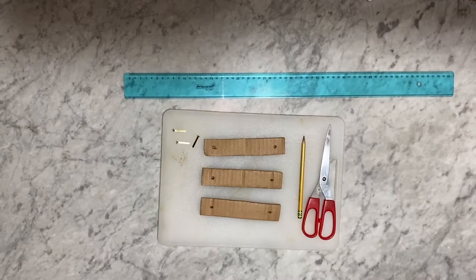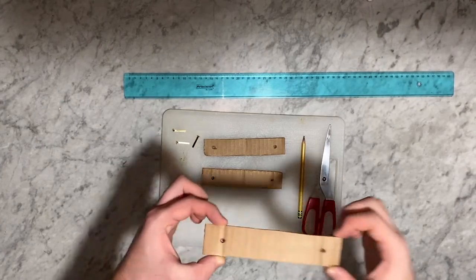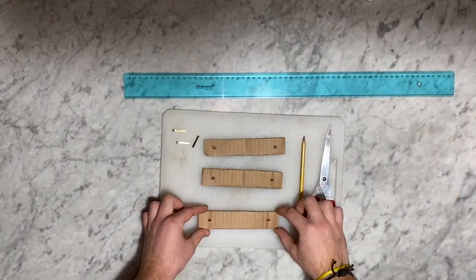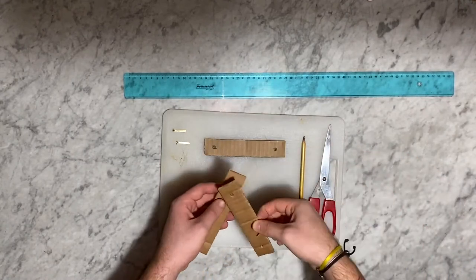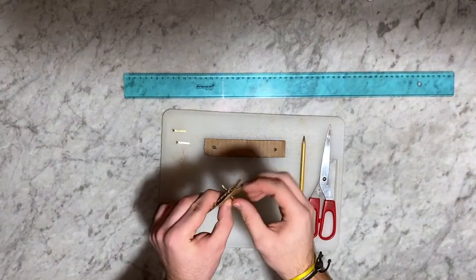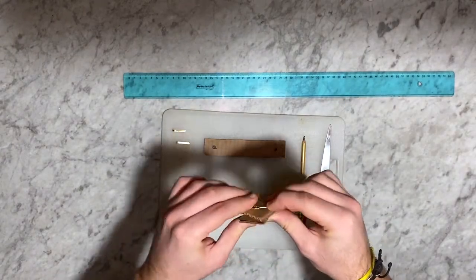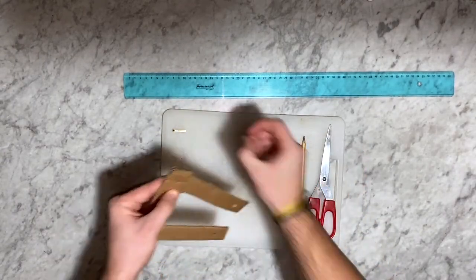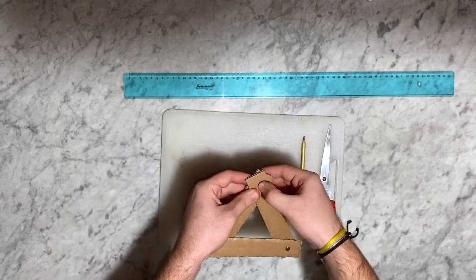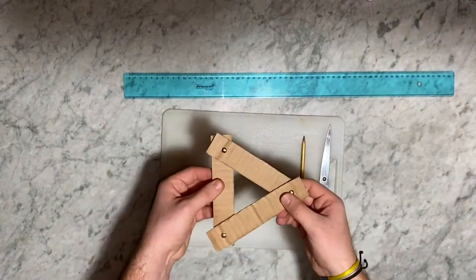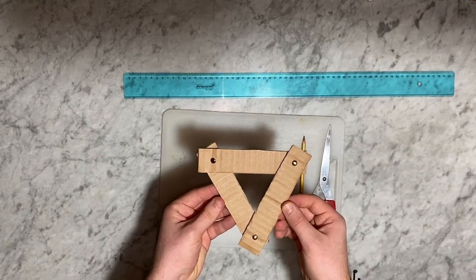We connect the rectangles with the simple clips. We've made a triangle. We can observe that it cannot move.